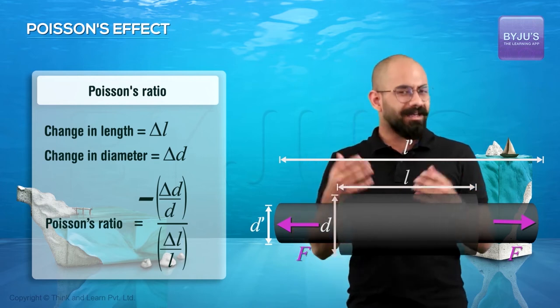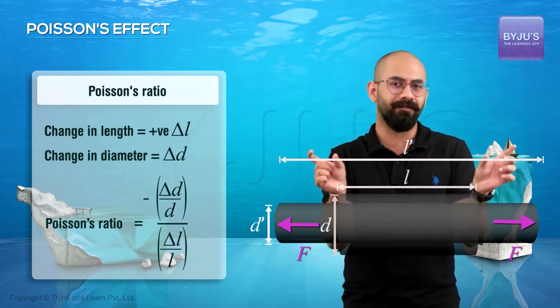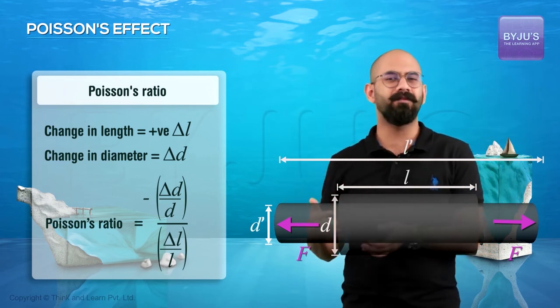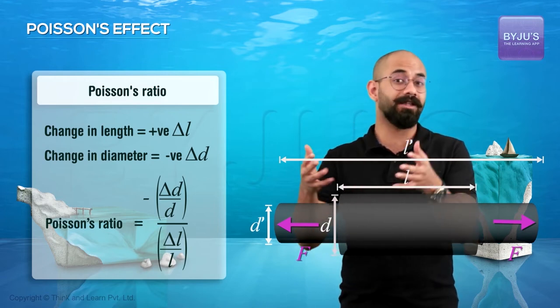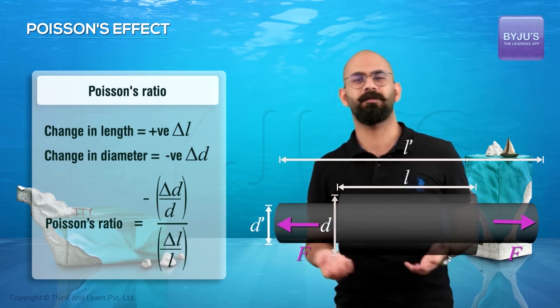Now why the minus? Again, it's pretty simple. Because in this case, when you're pulling it, that means delta L is positive, and obviously at that point the diameter will only reduce. So delta D will be negative. So therefore, to make the whole ratio constant—I'm sorry, to make the whole ratio positive—you add a negative sign. Therefore, the Poisson's ratio is always positive.